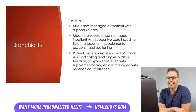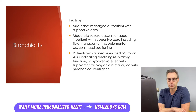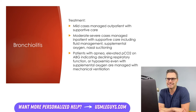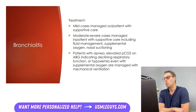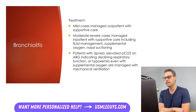Treatment includes supportive care in the outpatient setting if the case is mild. In moderate to severe cases, we admit the patient for monitoring, IV fluids as needed, and supplemental oxygen via nasal cannula, face mask, or head box — with target SpO2 above 90 to 92%. Nasal suctioning should also be performed to relieve obstructions. Signs that a patient may need more respiratory support — CPAP, high-flow nasal cannula, or in severe cases, intubation — include apnea, elevated PCO2 on ABG indicating declining respiratory function, or hypoxemia despite supplemental oxygen.